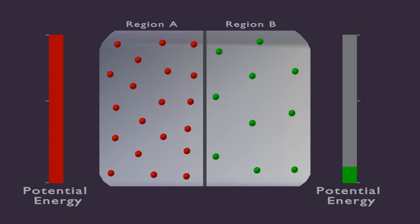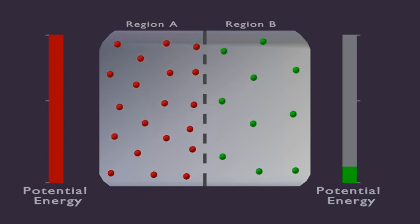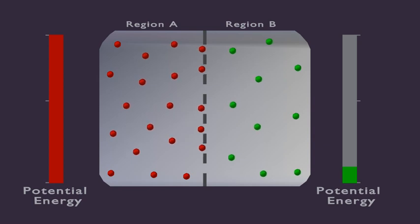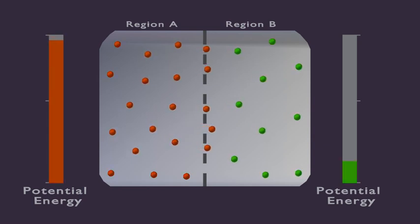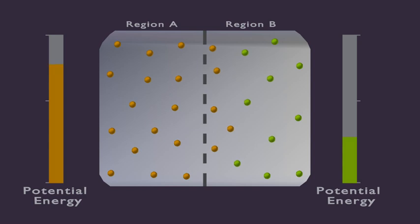Now, if you make tiny pores on the separating wall, what happens is the molecules start to move from A to B, i.e., from the region of high potential energy to the region of low potential energy.